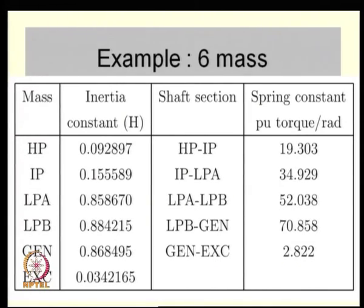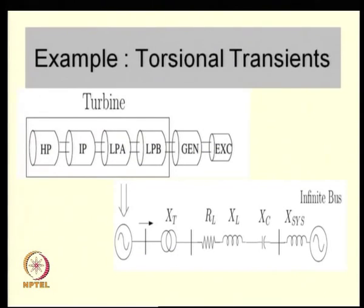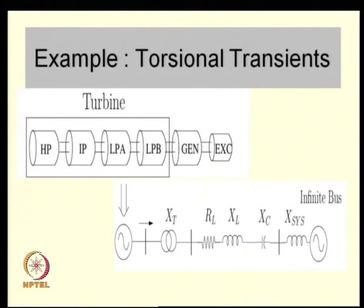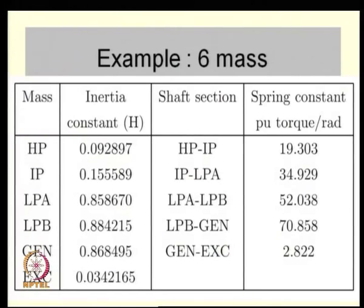The shaft sections interconnect the HP, IP, LP-A, LP-B turbines, generator, and exciter — they are coupled via the shaft. The HP is coupled to the IP, IP to the LP-A, and so on. This is typical data given in the IEEE first benchmark model, which is available in the literature.